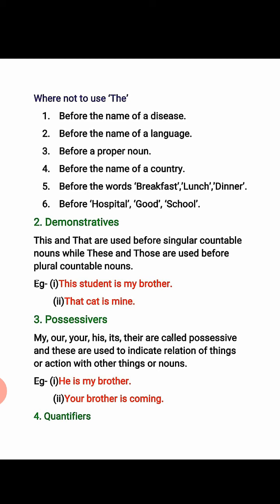The second type of determiner is demonstratives. This and that are used before singular countable nouns, while these and those are used before plural countable nouns. For example: this student is my brother; that kid is mine. Possessives — my, our, your, his, its, their — are called possessives, and they are used to indicate the relation of things or actions with other nouns. For example: he is my brother; your brother is coming. When we need to indicate any relation, we use possessives.